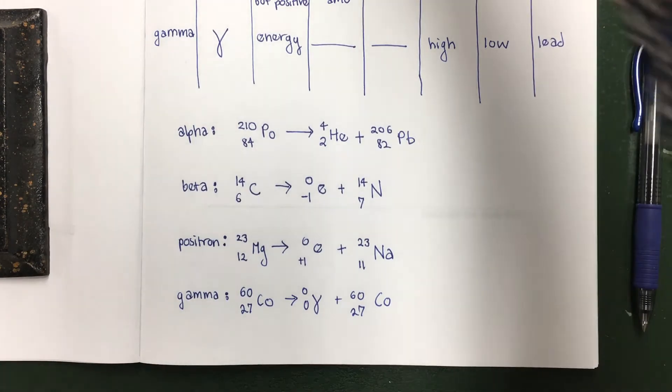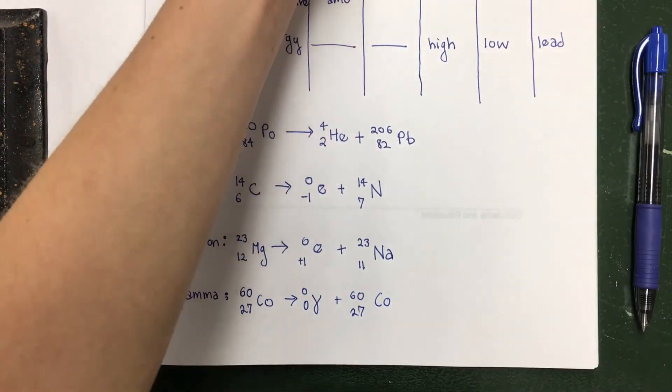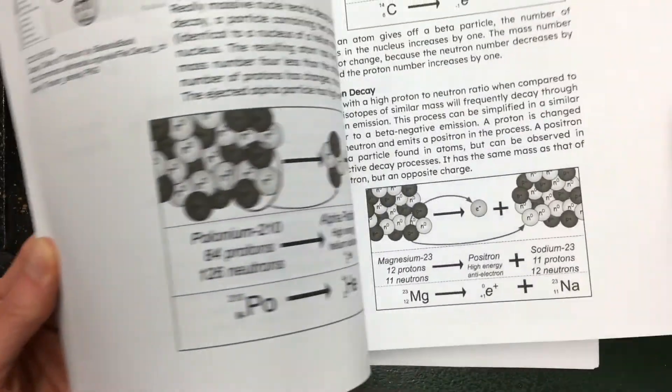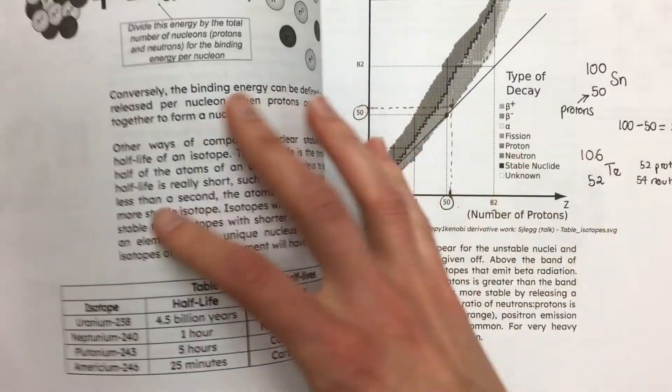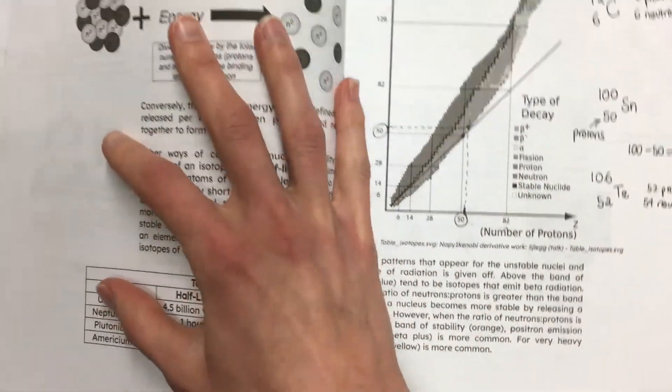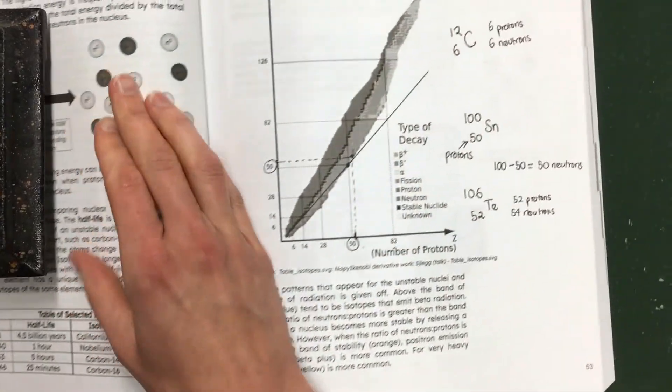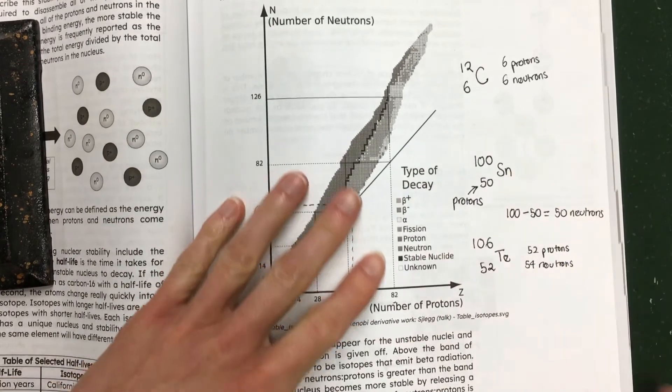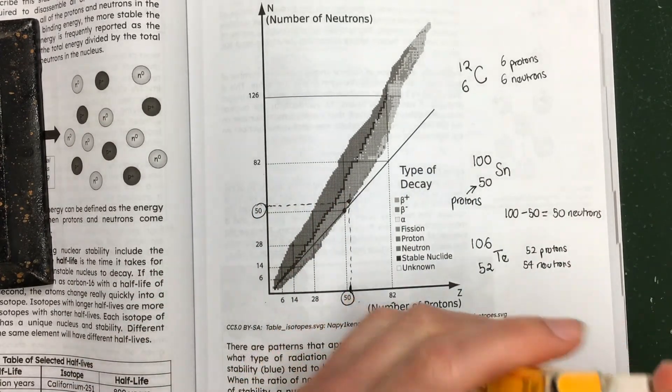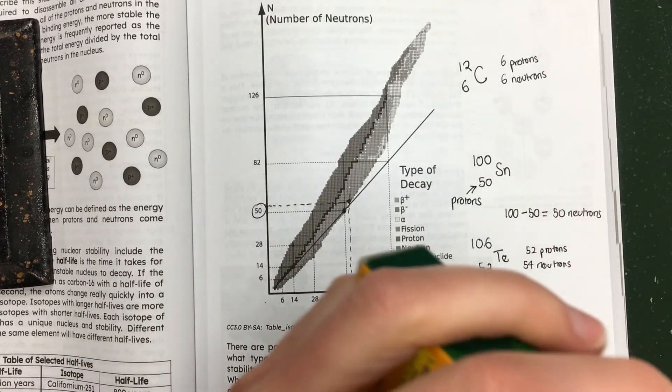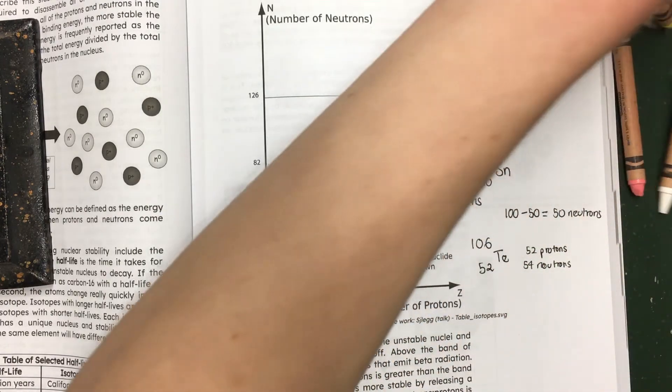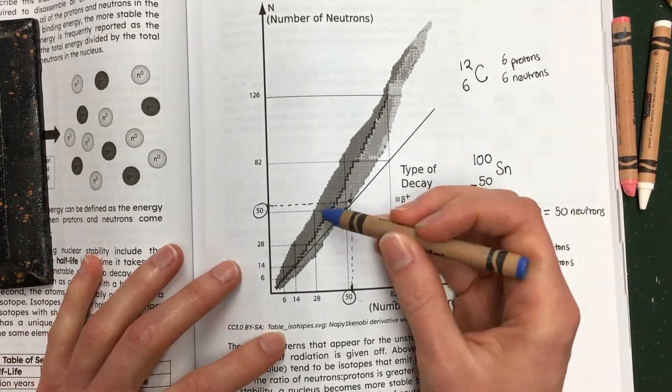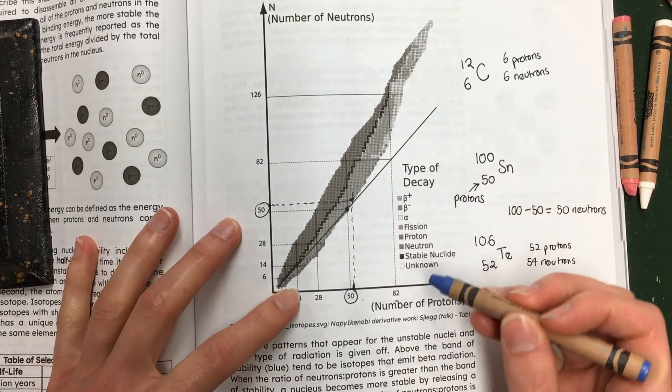Now the other thing that I want to show you in your textbook is this chart which we have been looking at already. It's on page 53. You need to be able to look at this chart and predict what type of decay an isotope is going to do. So if you have some crayons or something, it would be good to get those out. We're going to color this in a little bit.